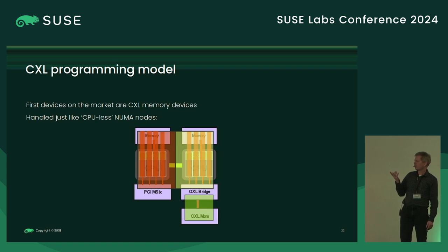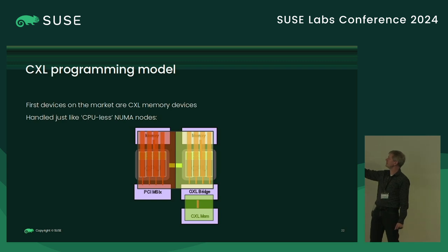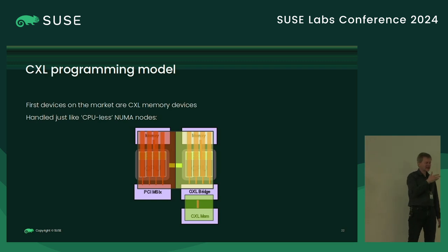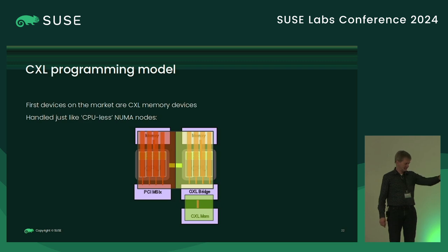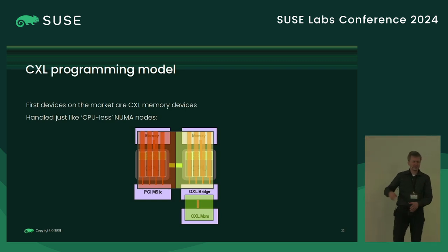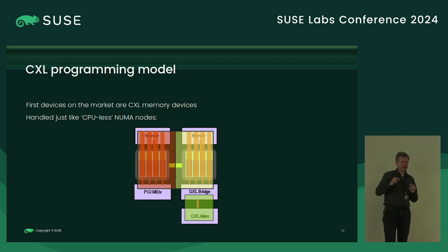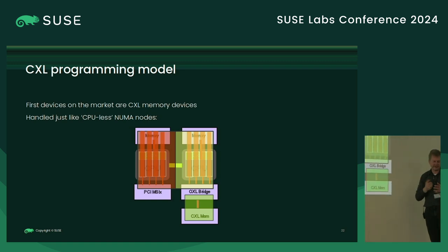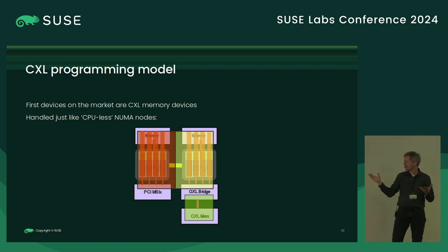Going back to the model: you now have your NUMA node on one side with a PCI device, and your NUMA node on the other side with a CXL bridge and memory attached. But this memory has a noticeably different latency than the regular memory. So you should map it to a different NUMA node — a CPU-less NUMA node — because that's what NUMA nodes are for: non-uniform memory access, which this definitely is. The question is: what are we using this memory for? This is where memory tiering comes in.